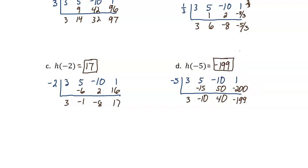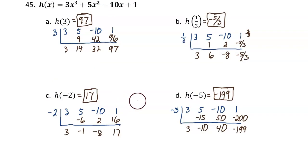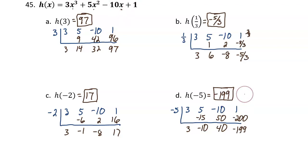If at any point you want to check that you're doing the synthetic division correctly, you can use direct substitution with the original equation. Take negative 5, plug it in for x, use your calculator with the exponents, and when you hit enter, it should give negative 199. This concludes the answer key video for the homework assignment.